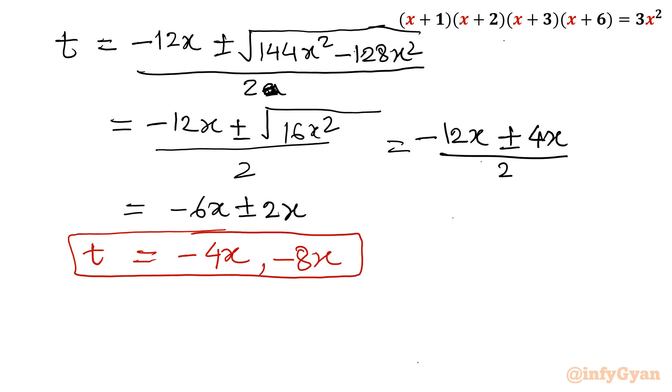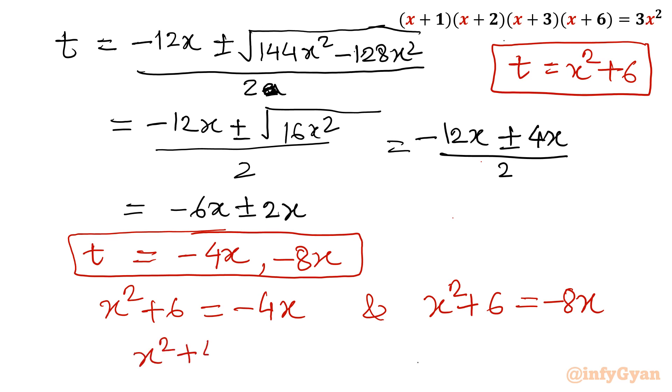This result is very useful for solving quadratic equations. Now our substitution t was x²+6. If you remember, you can check it, x²+6. So there are 2 equations: x²+6 equal to minus 4x and second equation x²+6 equal to negative 8x. So there are 2 equations. One is x²+4x+6 equal to zero and second equation is x²+8x+6 equal to zero.